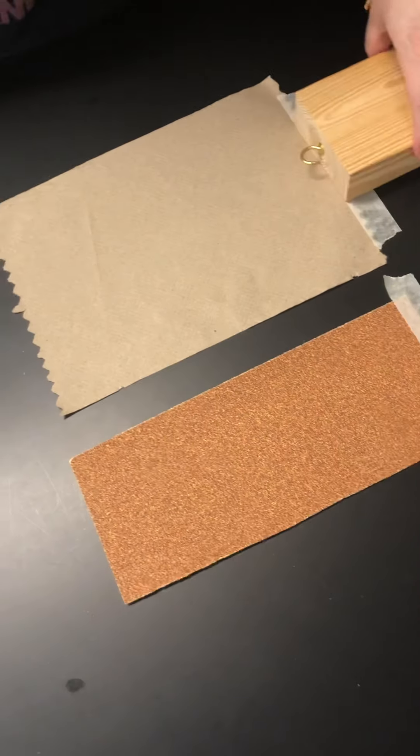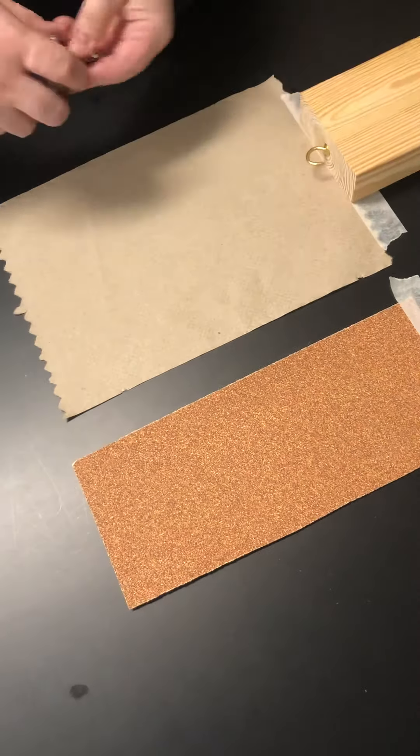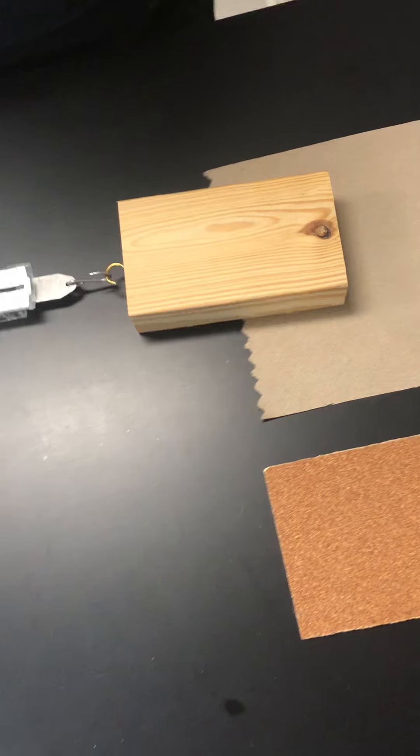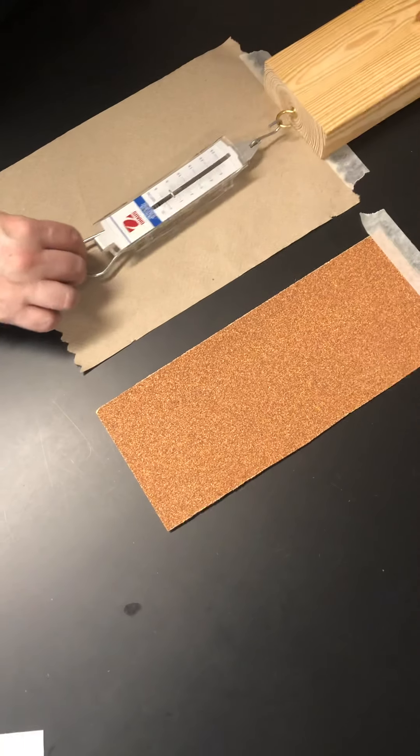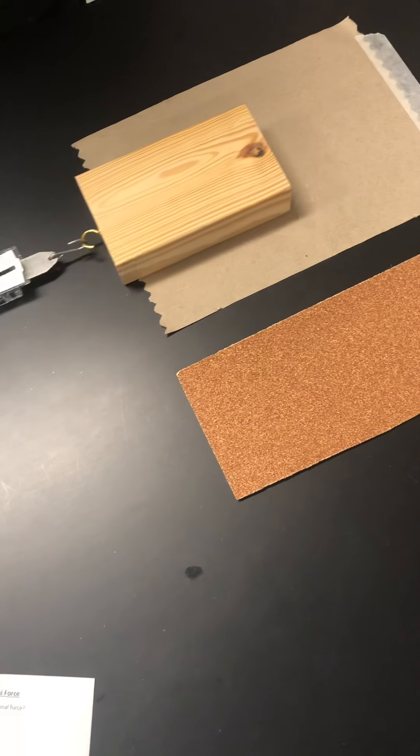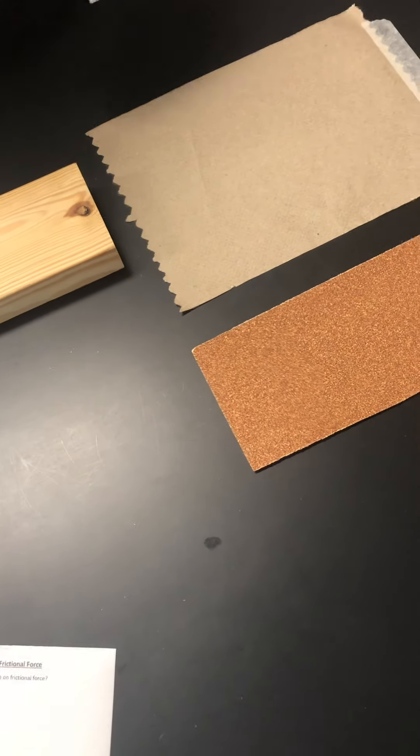Now moving on to paper towel. That was pretty easy. Some of the surface types you can see are easier to measure. 0.60.